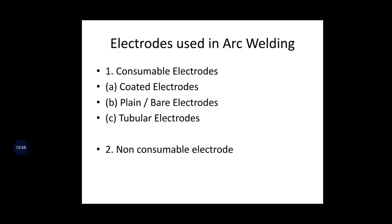Electrodes used in arc welding are classified as consumable electrodes and non-consumable electrodes. Consumable electrodes are of three types: coated electrodes, plain or bare electrodes, and tubular electrodes. Consumable electrodes are exhausted during welding and must be replaced — like refilling a cylinder — purchasing a new box of electrodes each time.